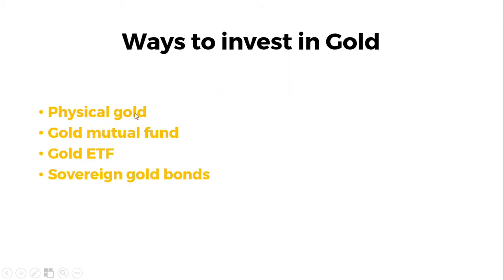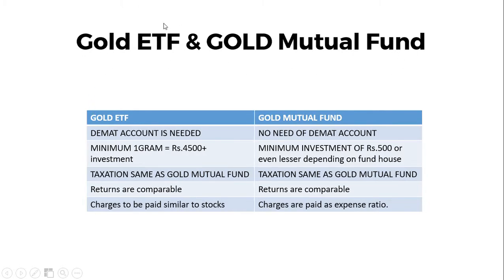Ways to invest in gold include physical gold, gold mutual funds, gold ETFs, and sovereign gold bonds. Physical gold is familiar to Indians. Gold ETF works like buying a stock, so you need a demat account, and the minimum is one gram. Gold mutual fund requires no demat account and you can invest any small amount, sometimes even 100 rupees. Taxation is the same for both. Returns are comparable, but charges differ — ETF has brokerage and DP charges; mutual funds charge an expense ratio.